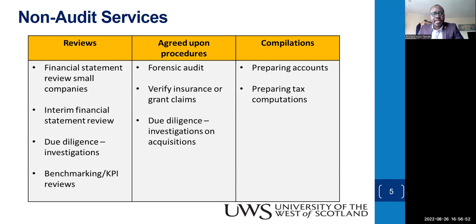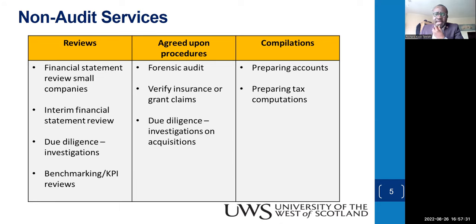Look at the differences between these non-audit services or non-audit engagements. Reviews normally involve looking at financial statements — small companies want you to review their financial statements. Sometimes you compile them together for them, which comes under compilation. Other types include interim financial statement reviews, due diligence such as undertaking investigations into procurement practices, and benchmarking and KPI review, which can be quite difficult because KPIs can be qualitative and difficult to measure. Then agreed-upon procedures — we look at forensic audits. That can also cut across forensic audits when you identify irregular procurement practices.